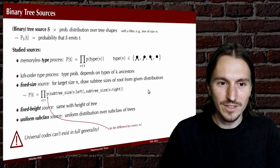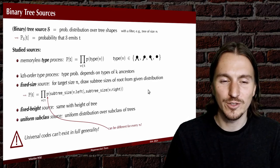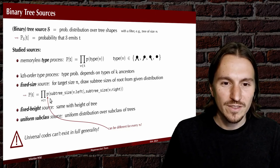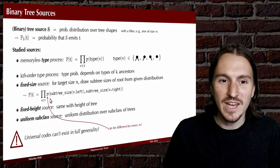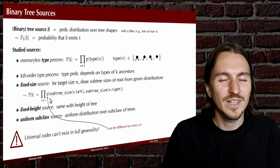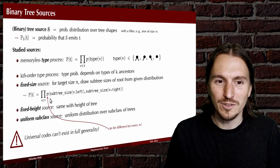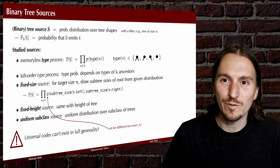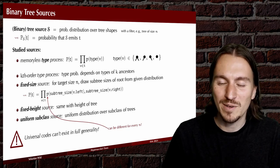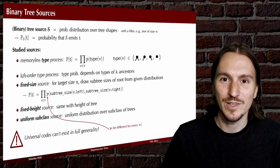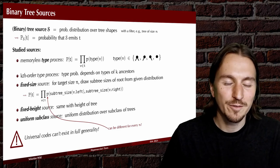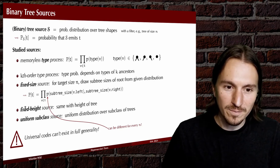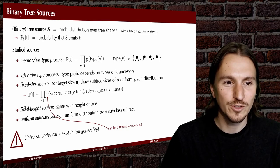It's worth pointing out that unlike in the text case, these notions of sources are too general to allow any universal source code. Intuitively, these fixed size sources, for example, they allow a different distribution of splits for every N. And that means they contain too much information to allow a universal source code. You can create examples of sources that are so specific that no code is powerful enough to adapt to all of these simultaneously. So we will have to restrict fixed size sources and fixed height sources in a certain way to make universal source codes possible.